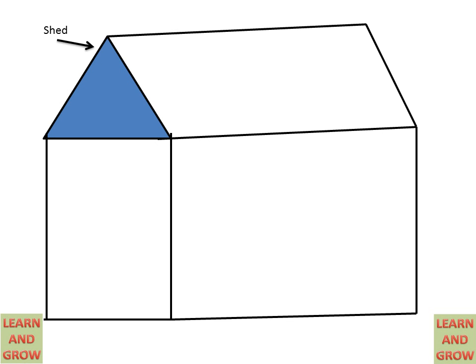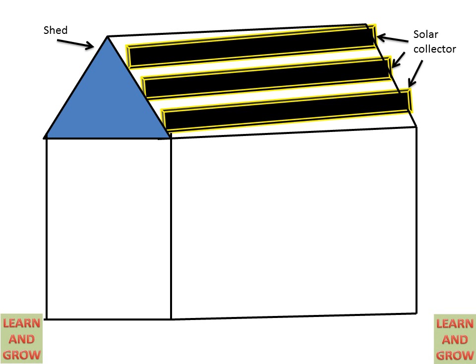First, we will discuss the process parts. We have a home. On the roof of the home, solar collectors are adjusted for collecting solar energy and heating the water at the desired temperature.